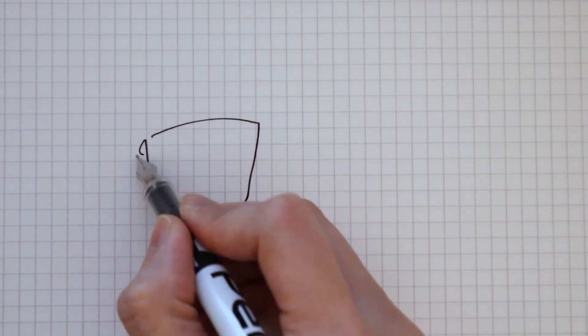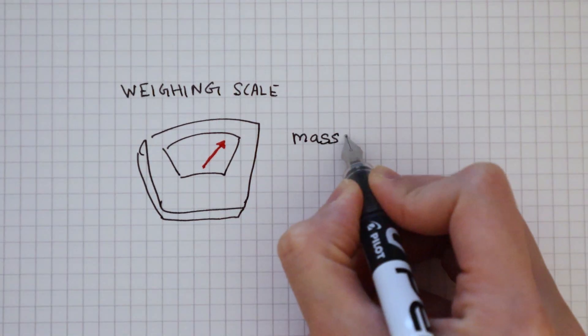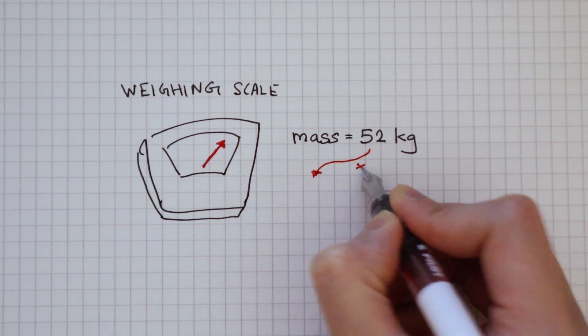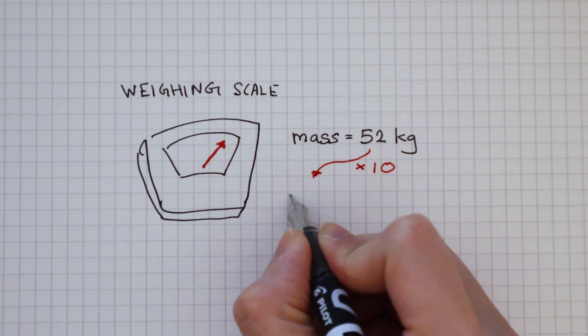This requires me to find out my mass using a weighing scale. My mass is 52 kilograms. To convert this into force, I need to multiply my mass by 10, which is the gravitational field strength on earth.